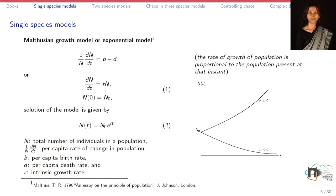We will start this lecture series with single species models. The very first mathematical model proposed in ecology was by Malthus, known as the Malthusian model, also known as the Malthusian exponential model. In this model, N is the population density, and Malthus modeled this population density with the equation: 1/N × dN/dt = B minus D, where B is the birth rate and D is the death rate of the population.